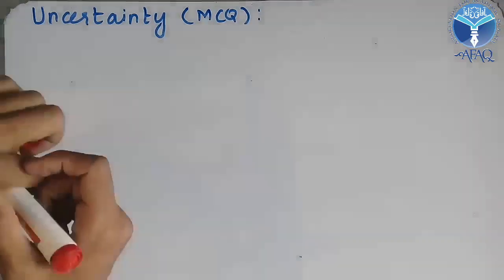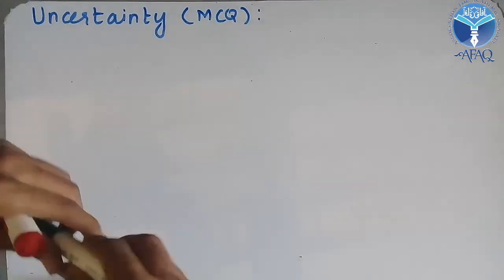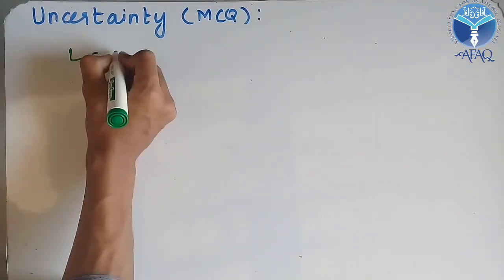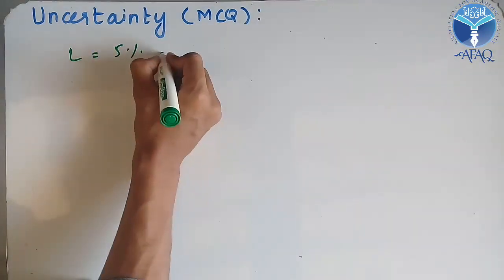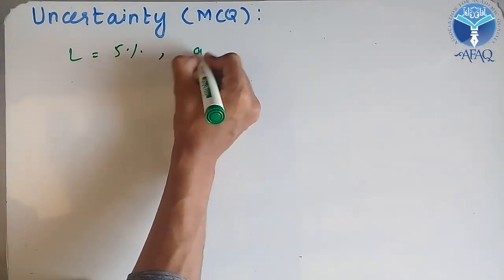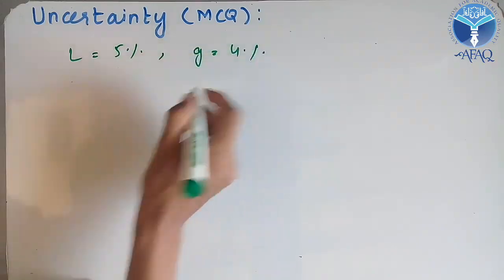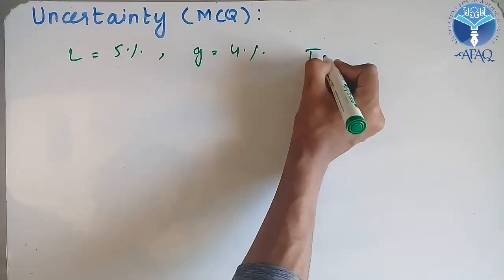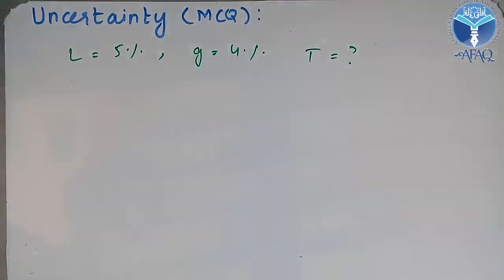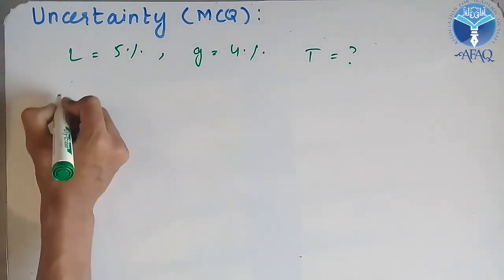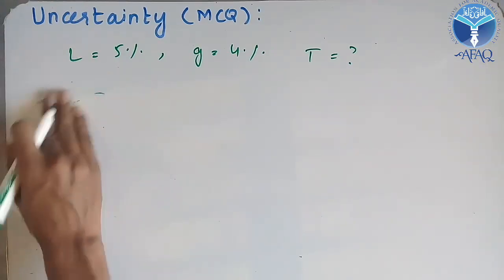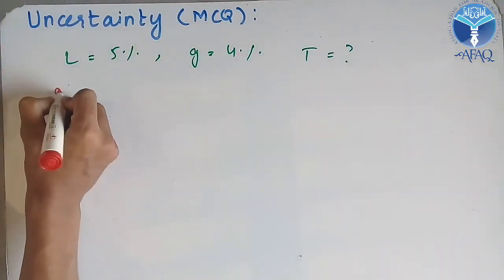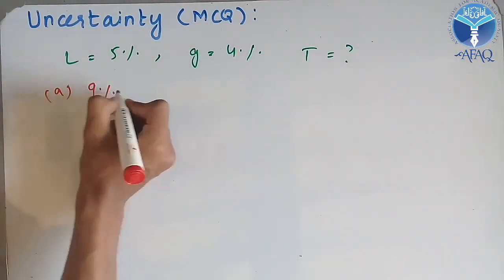Let's take another question. The percentage uncertainty in the length is equal to 5% and the percentage uncertainty in the gravity is equal to 4%. What will be the percentage uncertainty in the time period? Option A is 9%, option B is 3%, option C is 4.5%, and option D is none.